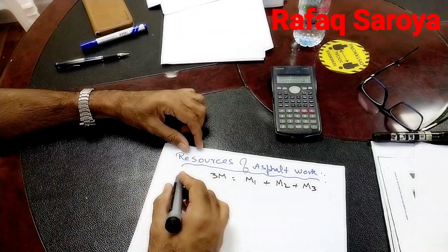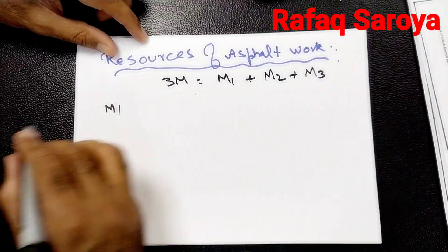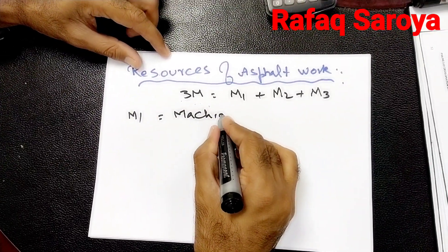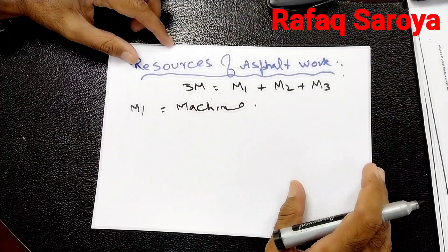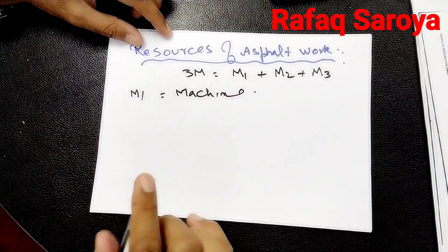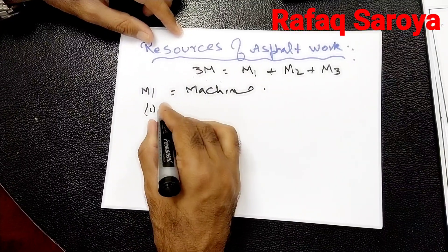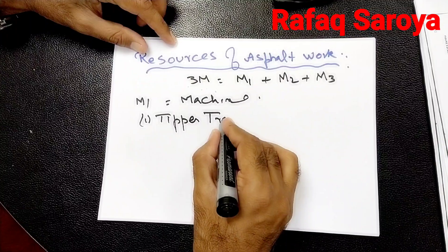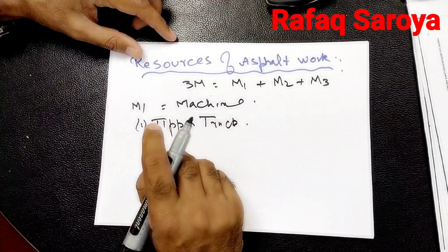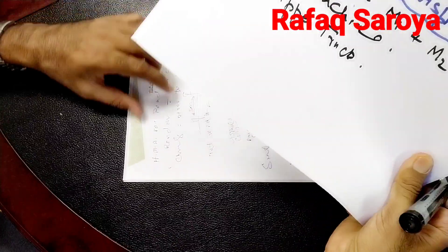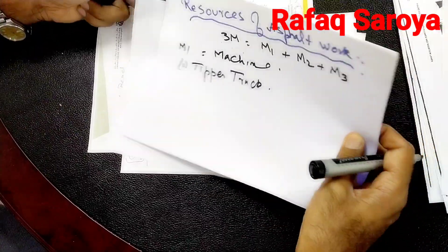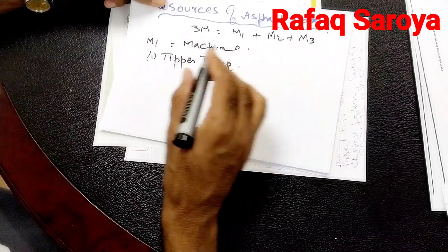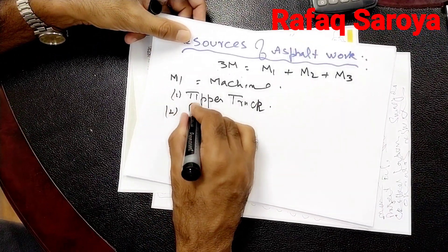These are the 3M. M1, the first M, is for the Machine. When you have to start the asphalt work on site, you need the proper machinery. First of all, you need the tipple truck in order to transfer the material from your site to the working place. Second, after the tipple truck, you need the pavers.